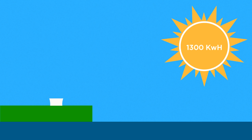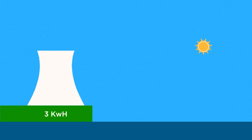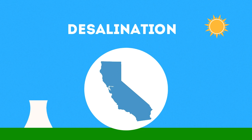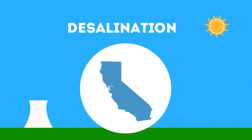Mankind, however, using reverse osmosis desalination only needs 3 kilowatt hours of energy per cubic meter, making mankind 430 times more efficient than the sun when it comes to the production of fresh water. The power requirements to desalinate water for the major coastal cities of California would only be 50 watts per person for the state, providing two-thirds of current public use and 10% of the water needs of the entire state when we include agriculture and other uses.